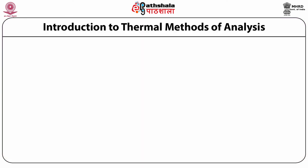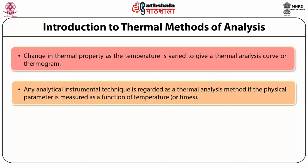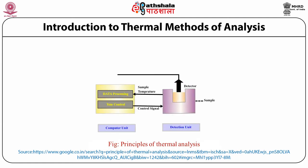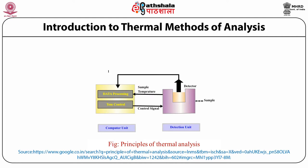Thermal events are usually studied by recording the change in a thermal property as temperature is varied, giving a thermal analysis curve or thermogram. According to analytical chemistry, any instrumental technique is regarded as a thermal analysis method if the physical parameter is measured as a function of temperature. Methods such as proton NMR, electron spin resonance, electron diffraction, X-ray diffraction, mass spectroscopy, UV-visible, and IR spectrophotometry all fall under this definition.